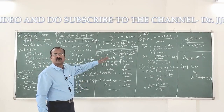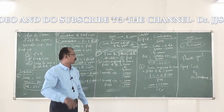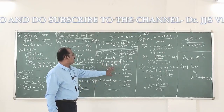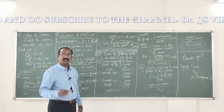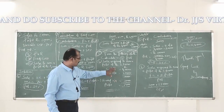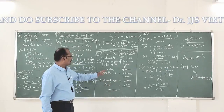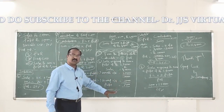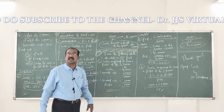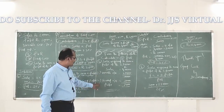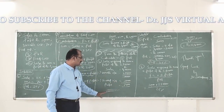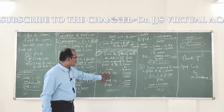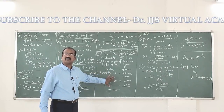Now let us get into the details of problem number 2. From the following data, calculate: A) PVR, and B) sales required to earn a profit of 2 lakh 80,000 rupees. The details presented are: sales 4 lakh rupees, minus variable overheads 3 lakh rupees, giving a balance of 1 lakh rupees. From that, subtract fixed overhead of 30,000 rupees, and you get 70,000 rupees as profit.